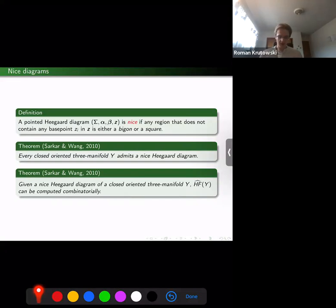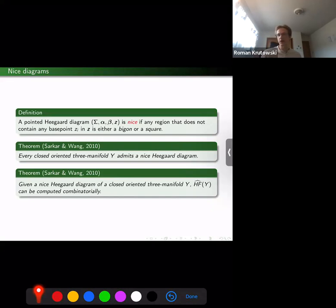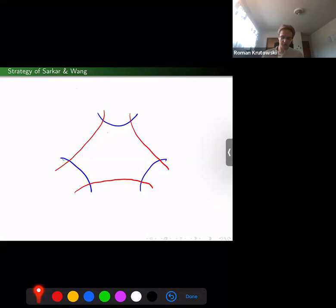Then it appears that, according to the proof of Sarkar and Wang, every closed oriented three-manifold Y admits a nice Heegaard diagram. The main application of this fact is that, given a nice Heegaard diagram, one can compute combinatorially the homology of these three-manifolds. The main ingredient in this is that if one has a Heegaard diagram like this, one can show that all domains of index one are actually either bigons or rectangles. I want to warn you here that nothing like this holds for domains of, say, Maslov index zero.